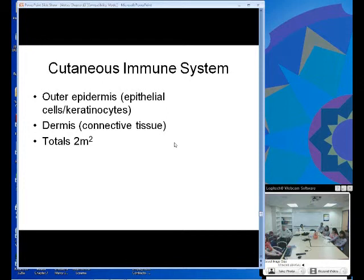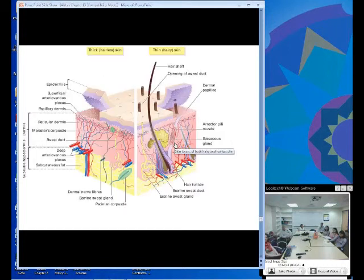The cutaneous immune system is made up of the outer epidermis with epithelial cells and keratinocytes, and then the underlying dermis, which is connective tissue. It totals about two square meters on our body. This is a picture of the outer layers of the skin - the epidermis and then the highly innervated dermis and underlying subcutaneous fat.